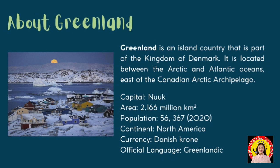Greenland's major physical feature is its massive ice sheet, which is second only to Antarctica's in size. The Greenland ice sheet has an average thickness of 5,000 feet, reaches a maximum thickness of about 10,000 feet, and covers more than 700,000 square miles.